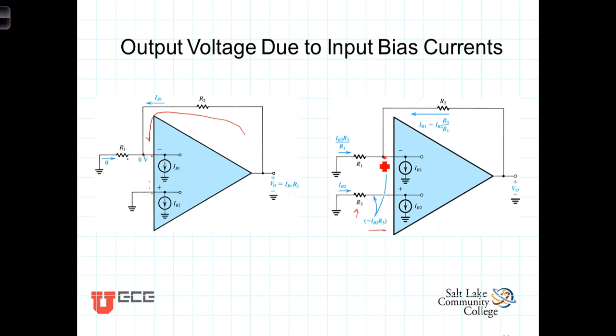The current flowing through R1 is going to be the voltage across R1, which is IB2 times R3. That's the voltage there. Zero minus that voltage is the voltage across there. It's IB2R3 divided by R1 to give us the current.